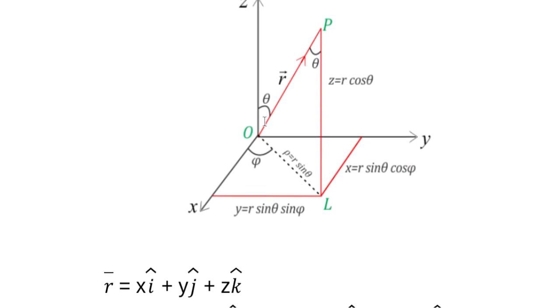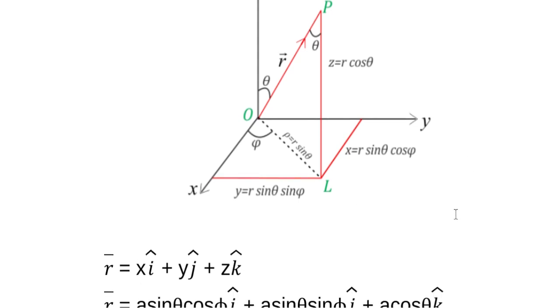So the vector is now defined as x, y, z components with the corresponding unit vectors i, j, k. We want to fill in the x, y, z components.